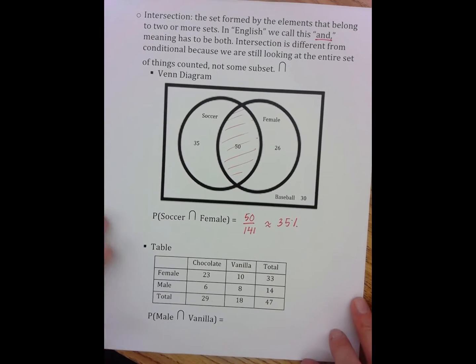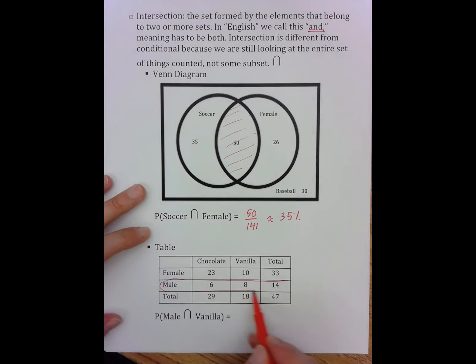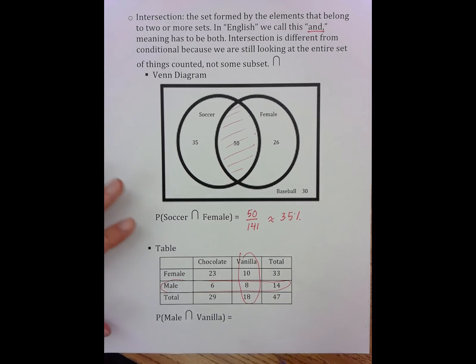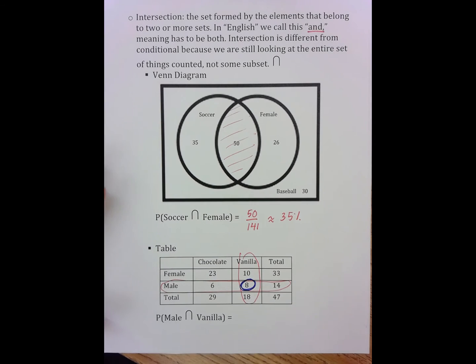Something very similar happens in the table in terms of I'm only looking for the overlap. So if I'm looking at the males and I'm looking at the vanilla, I'm only looking where they overlap, which happens right here at eight. So it's eight out of 47, which is approximately 17%.